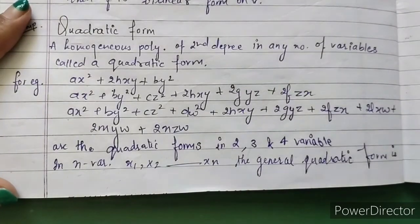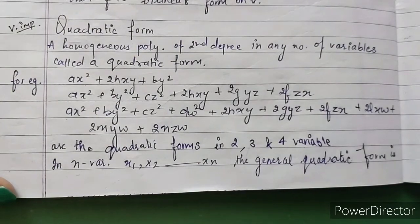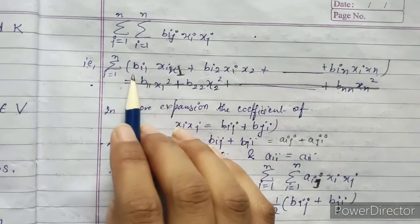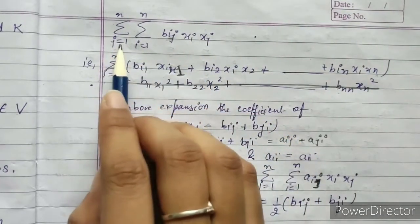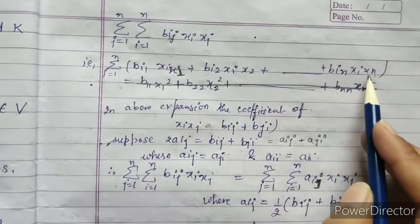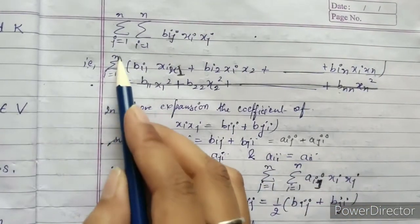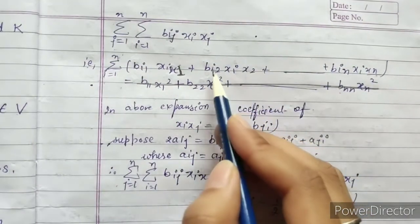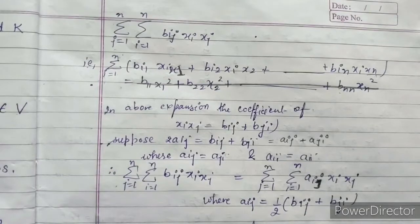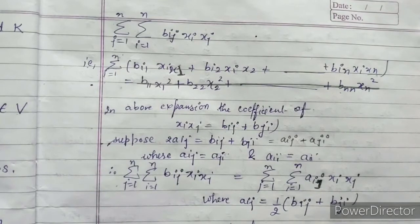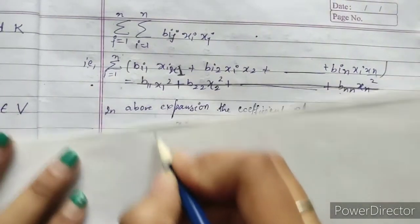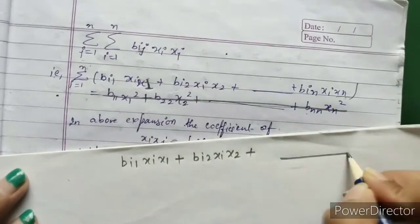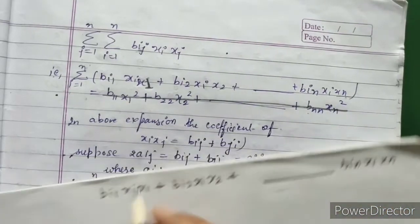When we talk about n variables x₁, x₂, ..., xₙ, the general quadratic form is written using summation. The summation form is Q = Σᵢ Σⱼ bᵢⱼ xᵢ xⱼ where i and j vary from 1 to n. Expanding this, the first terms include b₁₁x₁x₁ + b₂₁x₂x₁ + b₁₂x₁x₂ + b₂₂x₂x₂, and so on for all remaining terms.